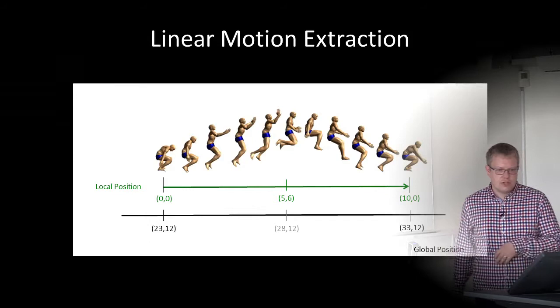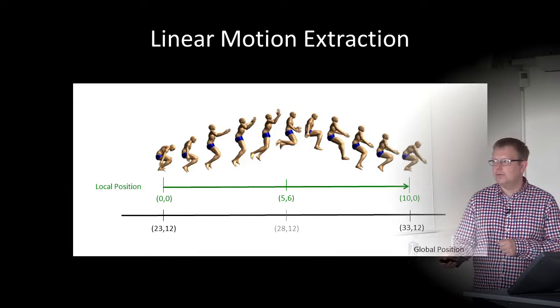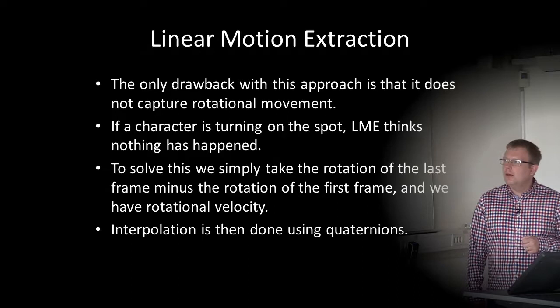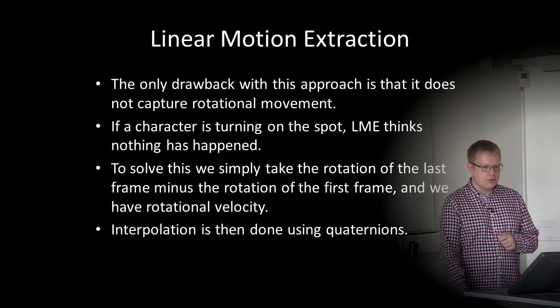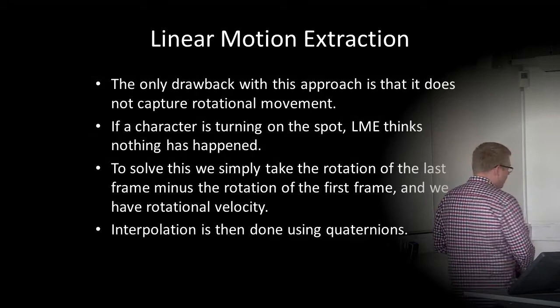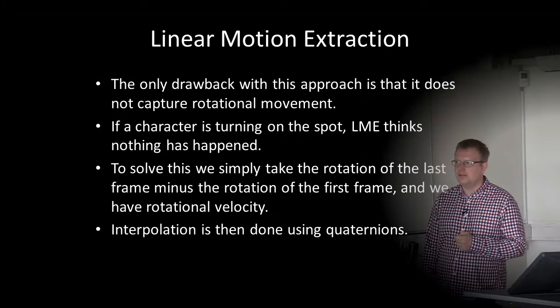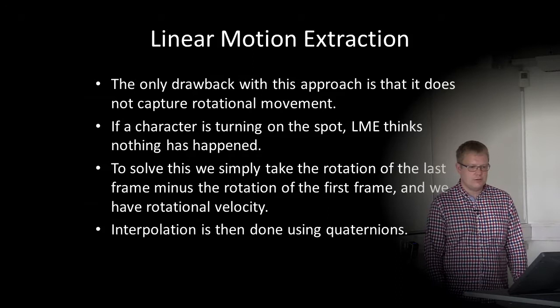For a jump, we also change the y position height. The only drawback to this approach is that it does not capture rotational movement. If the character turns on the spot — walks forward, turns around, walks back — linear motion extraction thinks nothing happened because it ended up at the same position. To solve this, we take the rotation of the last frame minus the rotation of the first frame to get a rotational velocity, and use quaternion interpolation.